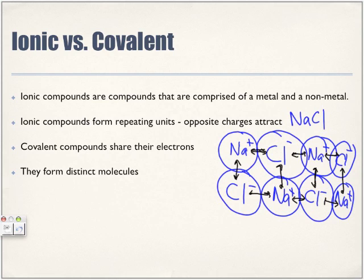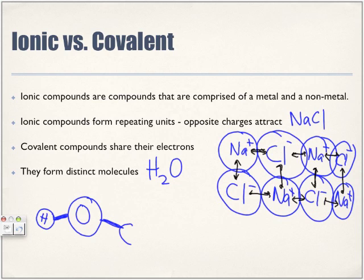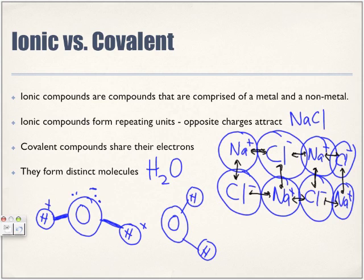Covalent compounds share their electrons and form distinct molecules. For example, H2O — oxygen has two pairs of shared electrons surrounding it, which makes oxygen slightly negative. This in turn makes hydrogen slightly positive. When water forms a bond, it attaches to another molecule of water because of the attraction between the slightly positive hydrogen and the slightly negative oxygen.